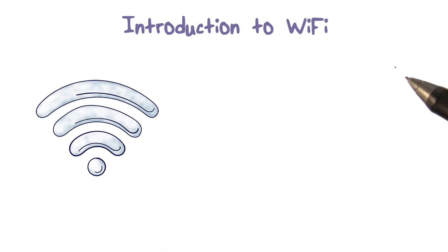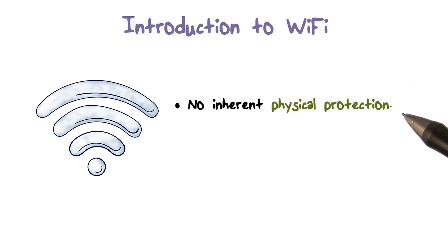In wireless networking, data is not transmitted via physical wiring. Instead, data is transmitted in air, which is an open medium. In other words, there is no inherent physical protection of communications.